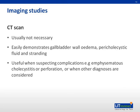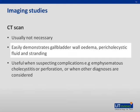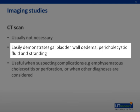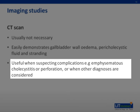CT scans are used commonly for the diagnosis of cholecystitis for their practical convenience as an imaging modality. CT easily demonstrates gallbladder wall edema and other findings such as pericholecystic stranding and fluid. It is particularly useful when suspecting complications of acute cholecystitis such as emphysematous cholecystitis or gallbladder perforation, and also helps to rule out other conditions presenting with similar signs and symptoms.